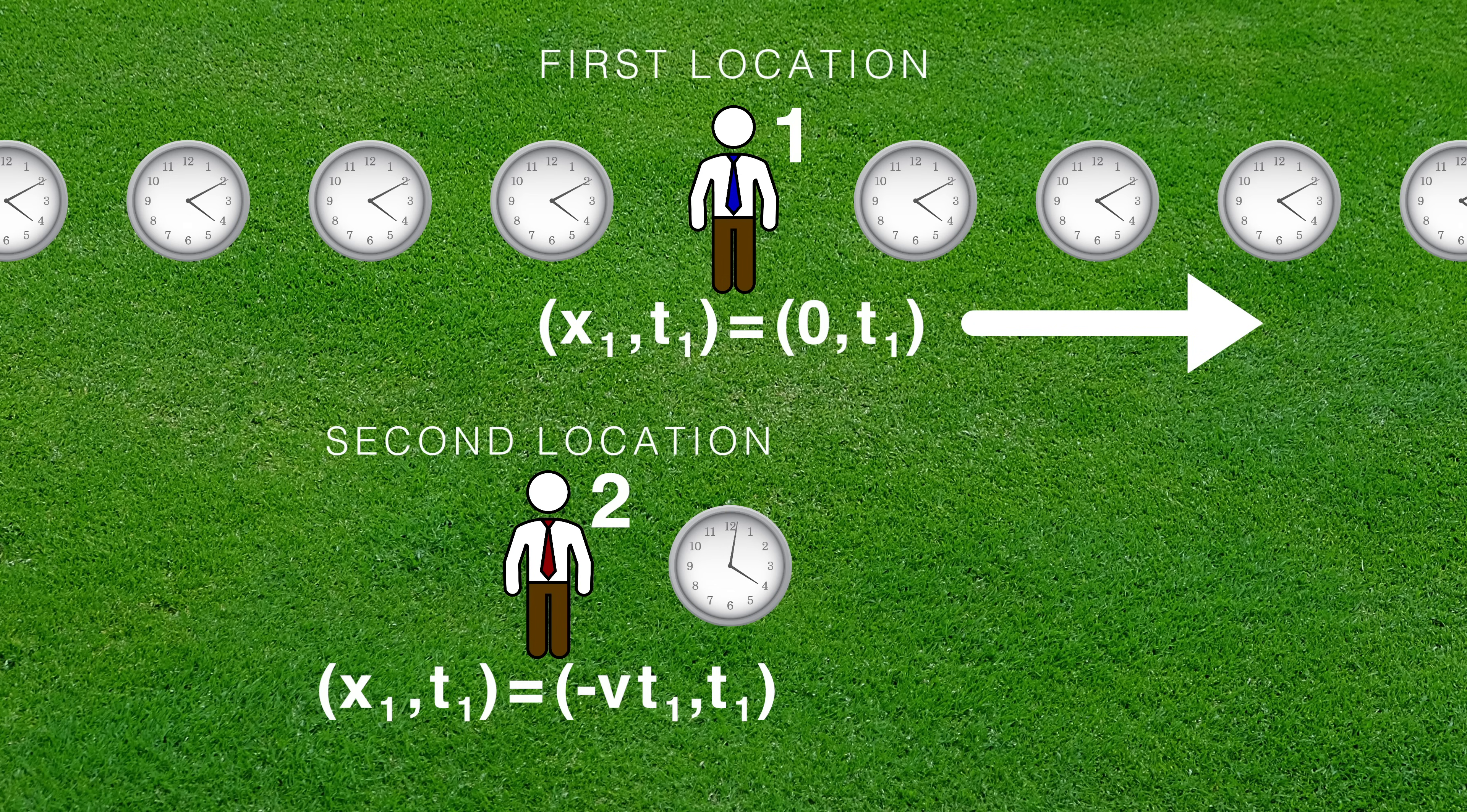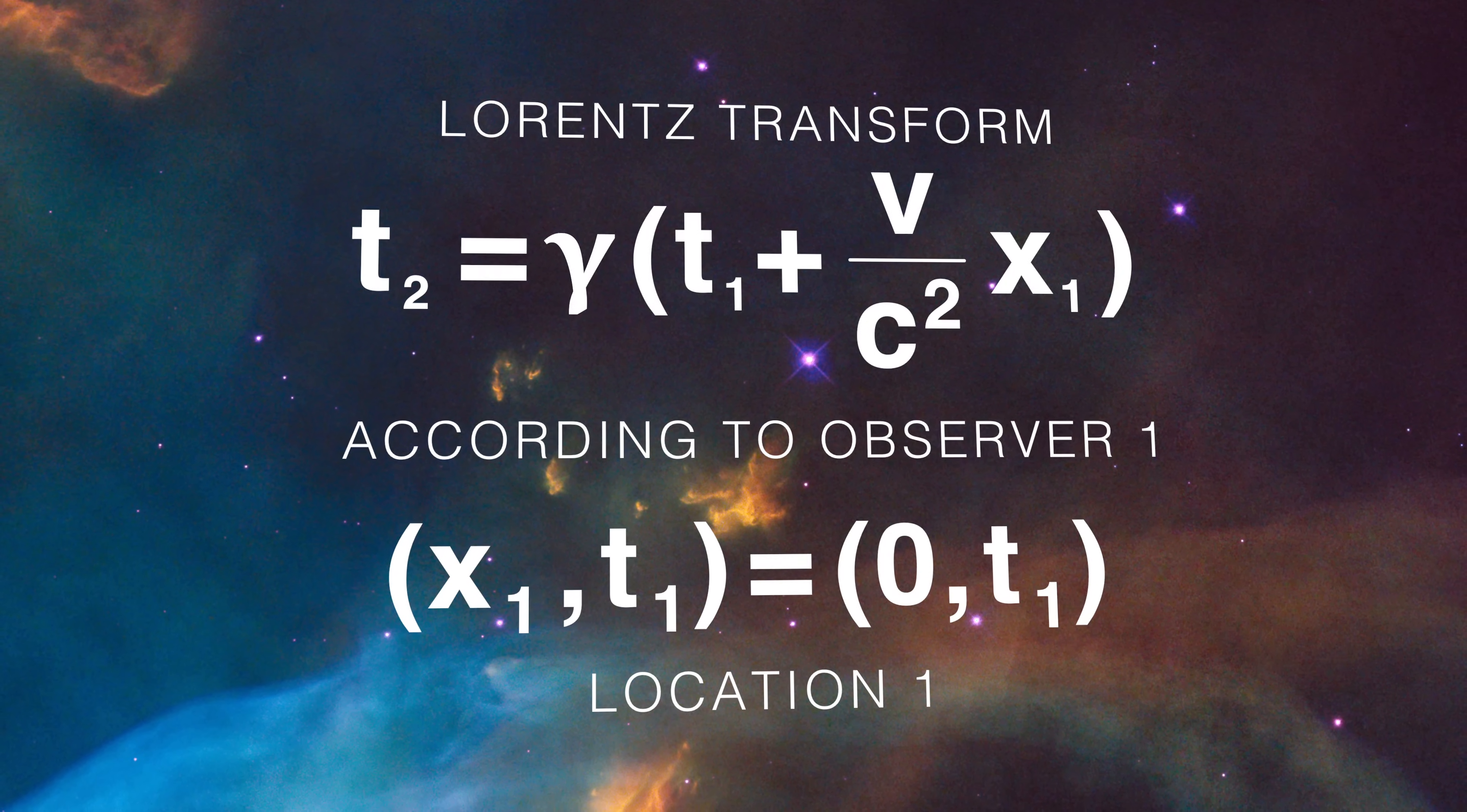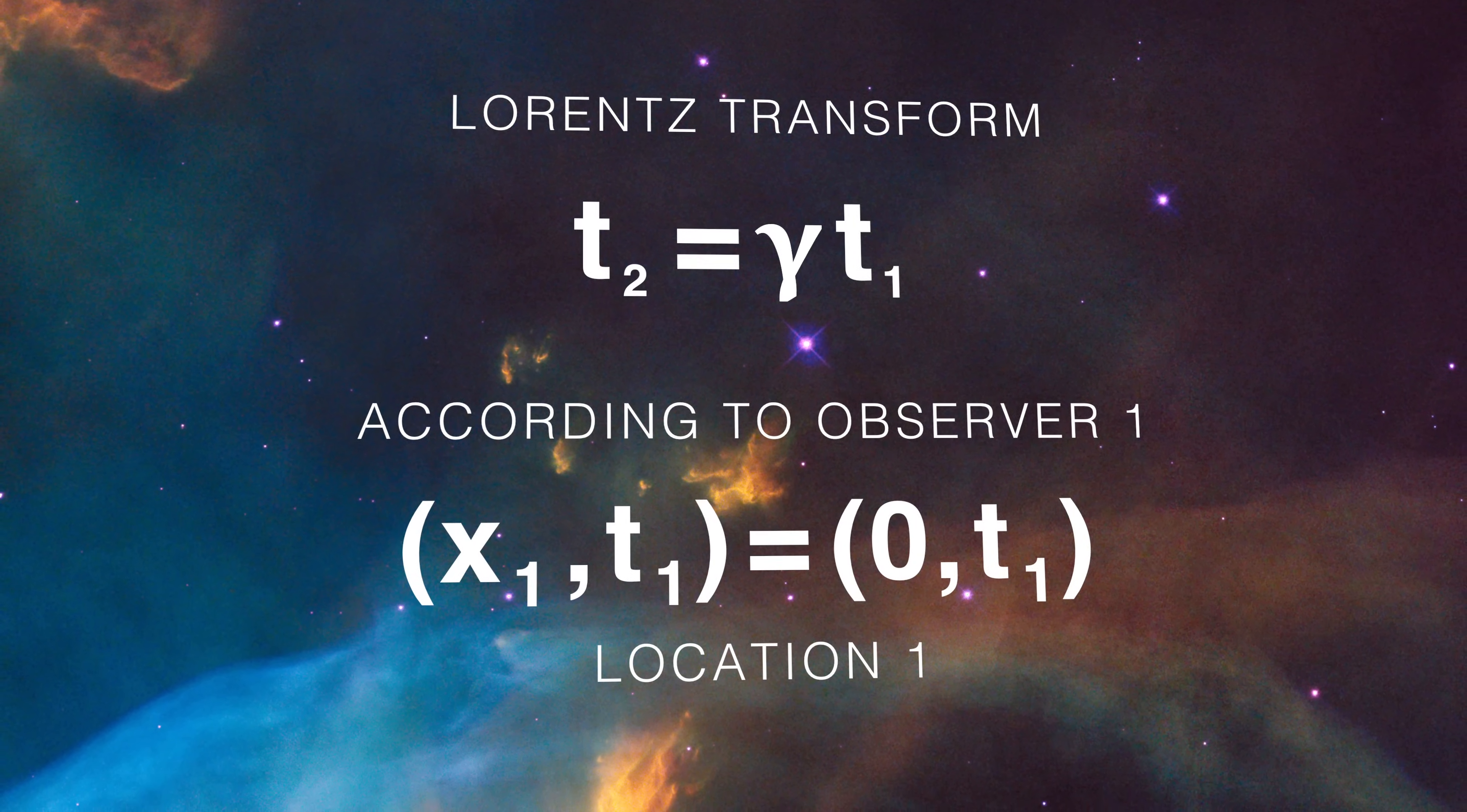We can now use the Lorentz transforms for time. Let's first find out what Observer 2 thinks the time is at Observer 1's location. We just put in the values seen by Observer 1. In doing so, we find that t sub 2 equals gamma t sub 1. That's just the normal time dilation equation.